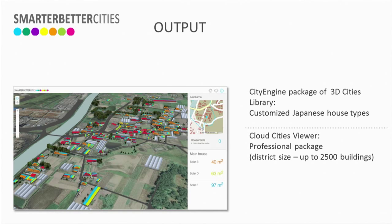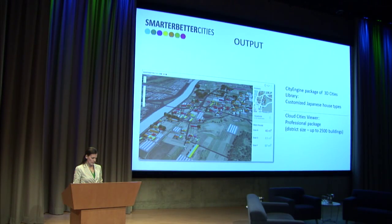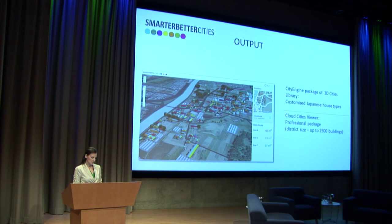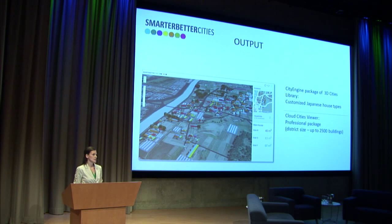For the university we produced two products. The first was customized Japanese house types for City Engine, which can also be used as rule packages for further analysis methods in ArcGIS Desktop. The second was a customized web viewer called Cloud Cities, which includes 3D web scenes of the five villages, 2D maps, and ArcGIS Online maps for an easy and intuitive way to share and discuss the 3D reconstruction models of the fishermen villages.